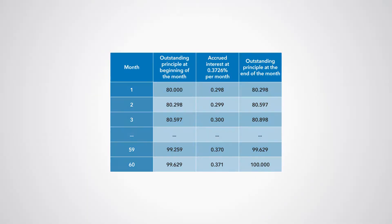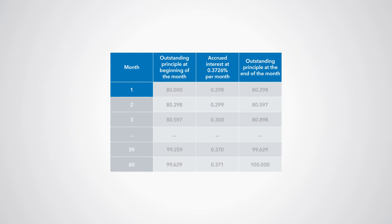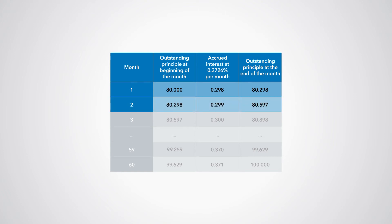We can now calculate the outstanding principal of the bond and the accrued interest. At the beginning of month 1, the issue price is equal to 80. During the first month, interest of 0.298 accrues. This amount is reinvested in the bond, which means at the end of the first month, the value of the bond is 80.298. At the end of the second month, the total outstanding principal is 80.597, and so on.